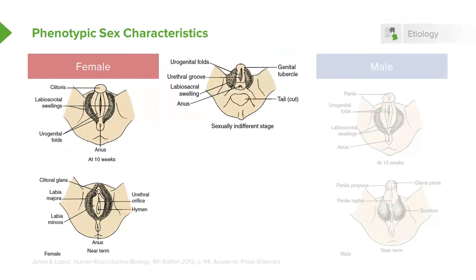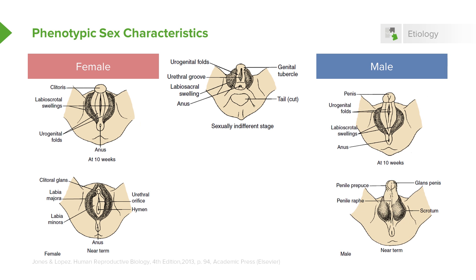If your gonads produce testosterone or estrogen, that will make your phenotypic sex — the sex shown by your external differentiated genitalia. In the female, the glans penis will become the clitoris. The labioscrotal ridge will not fuse, and there will be an introitus for the vagina, with a labia minora and labia majora. In the male, testosterone — DHT specifically — causes the glans to become the penis. The labioscrotal swellings will become the scrotum, with fusion of the labioscrotal folds forming a penile raphe.